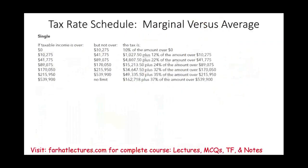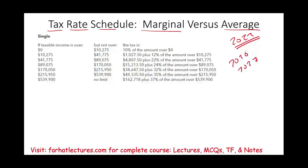If your taxable income is more than $100,000, you'll have to use the tax rate schedule. Here we're going to learn about the marginal tax rate versus the average tax rate. Our system is a progressive tax system — the more you make, the more you pay. This is the 2022 tax schedule; you could be looking at this in 2026 or 2027. The percentages and brackets will be different, but the concept will be the same.